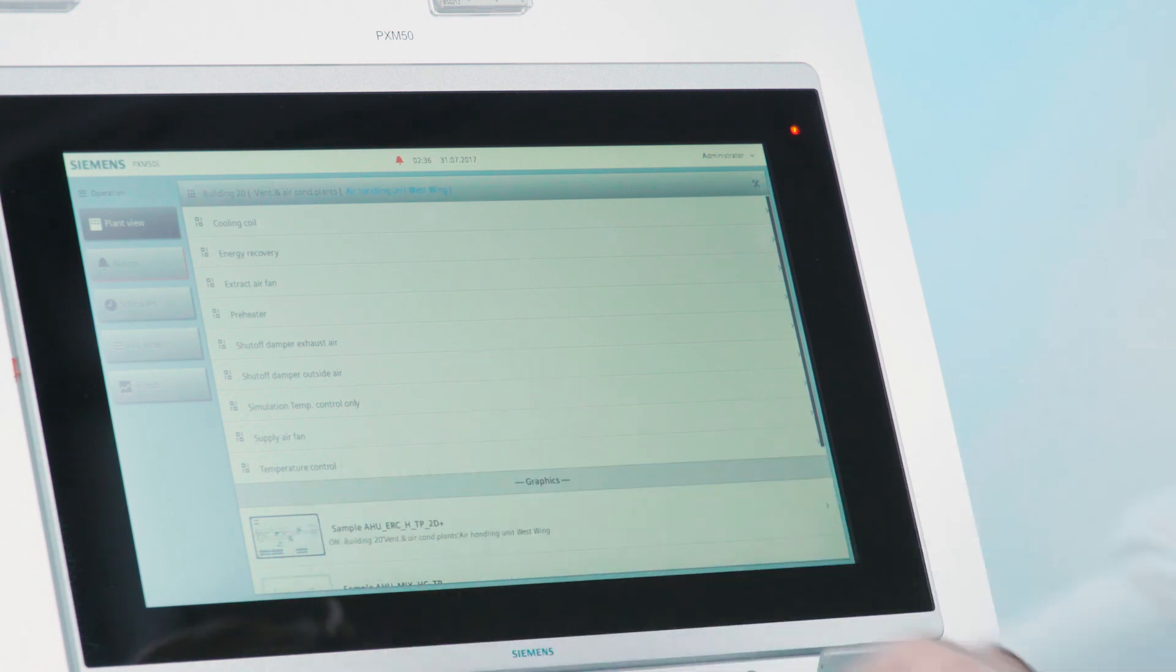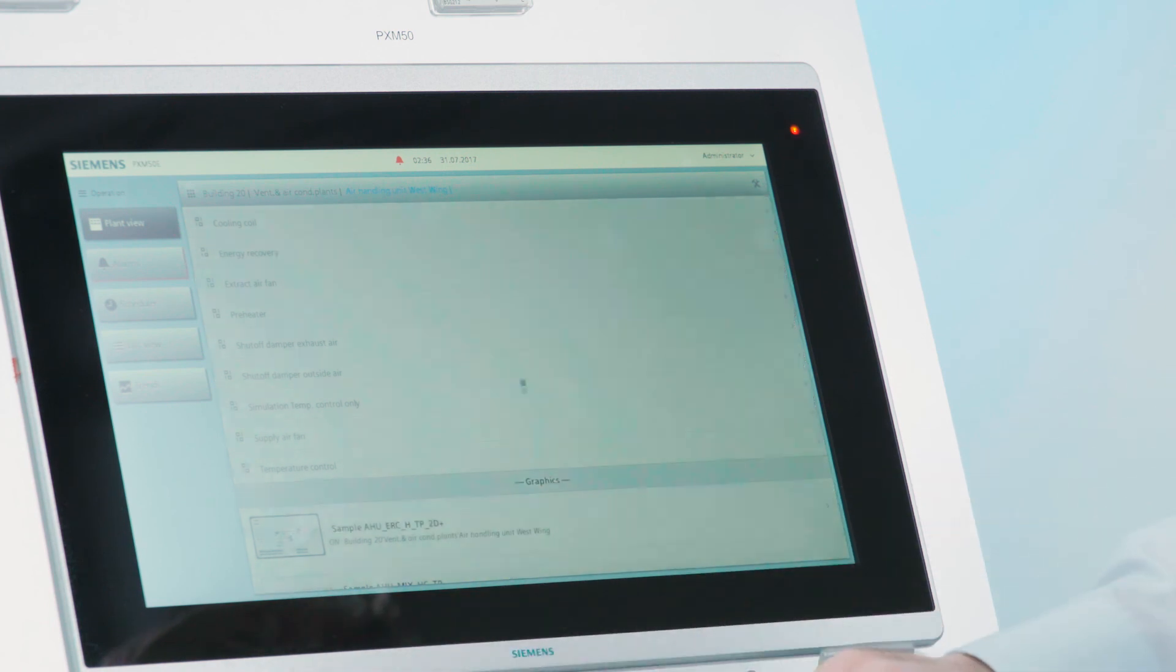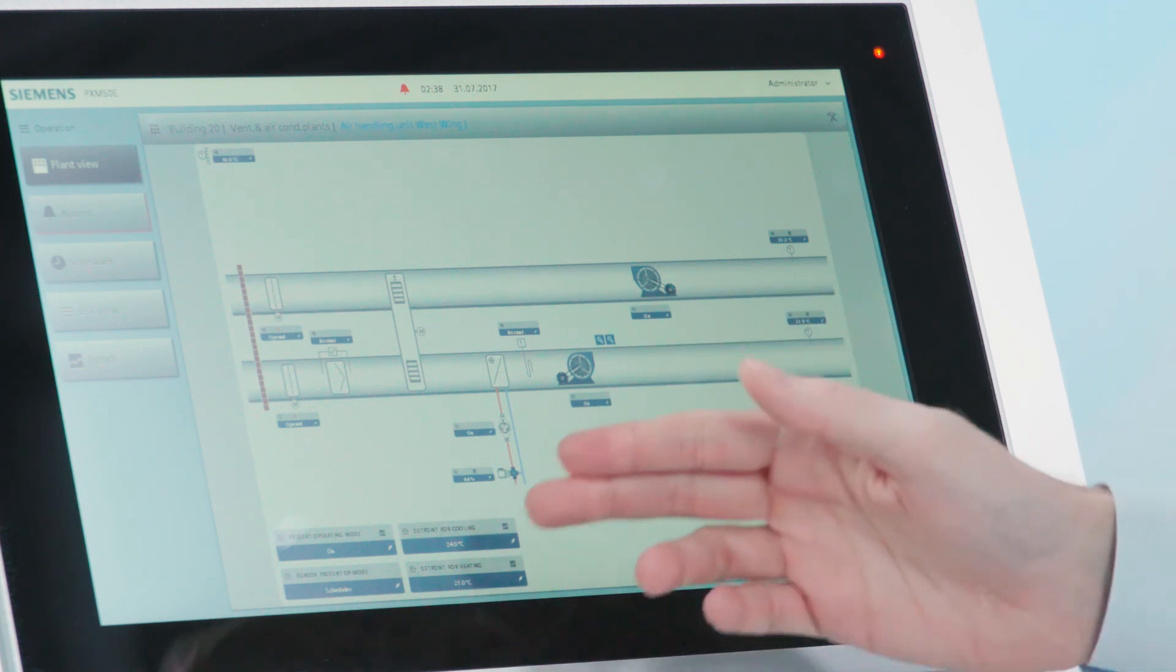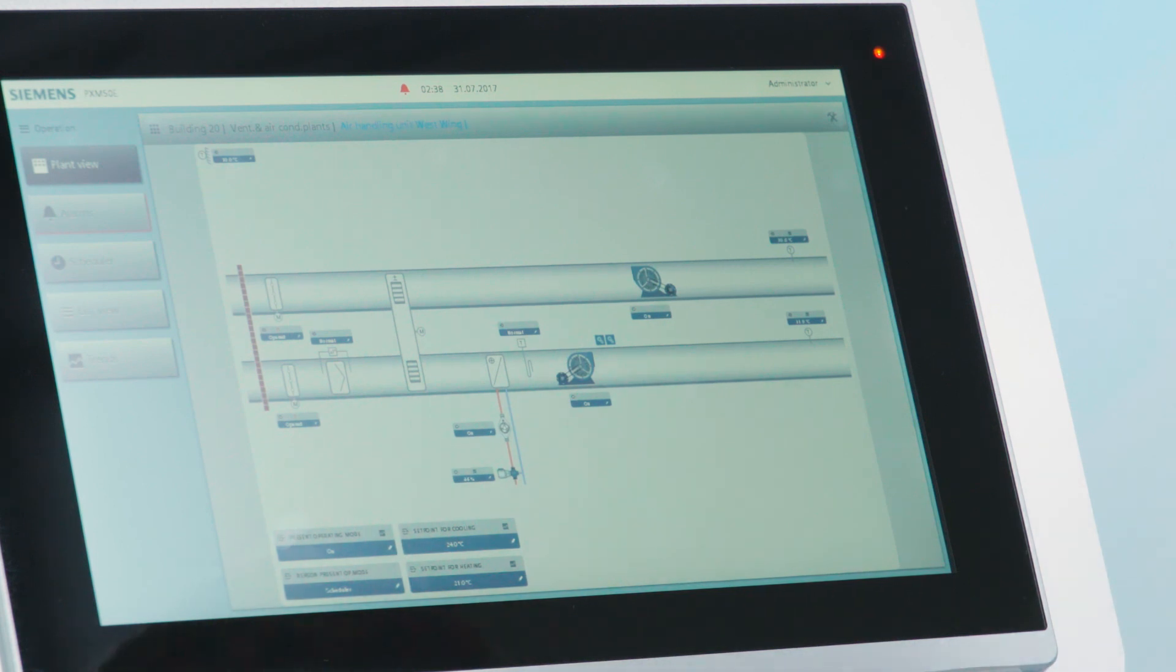I can now open that graphic by simply clicking on it, and we see that the graphic has opened, and not only has it opened, it's already connected its elements to the data that we have in the system. For example, we see that the fan is labeled on and it's turning, we see that the pump is on, we have all our set points, so we are ready for really graphically operating our plant.